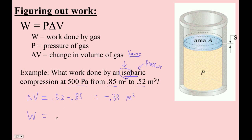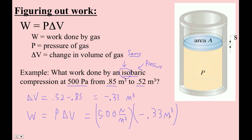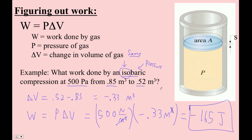And then work is pressure times change in volume, so it's 500 pascals — that's newtons per square meter — times negative 0.33 cubic meters. So times 500, and I get that it's negative 165. The units: meters squared cancels leaving one meter, and you end up with newton meters, which are joules. So that's a very cool thing. That's one type of example problem.